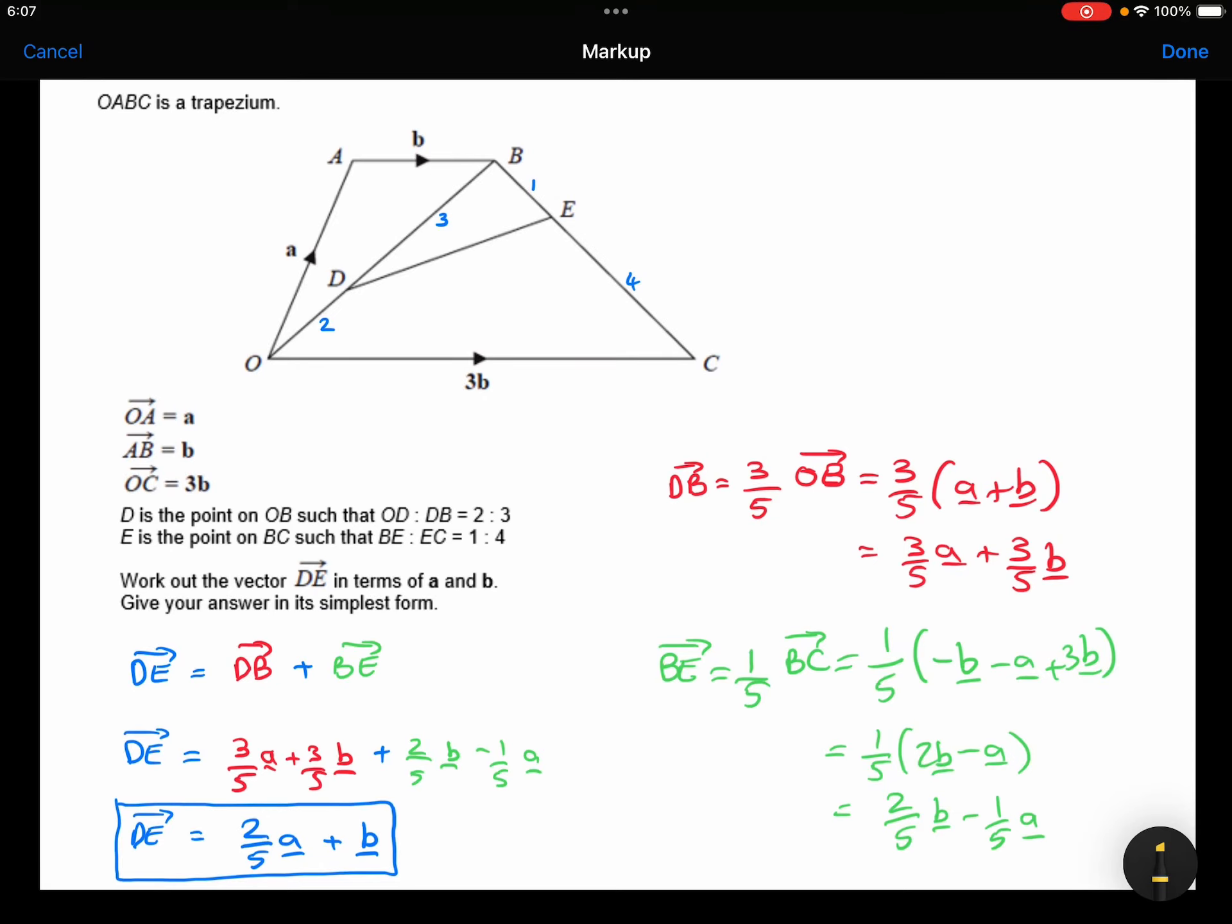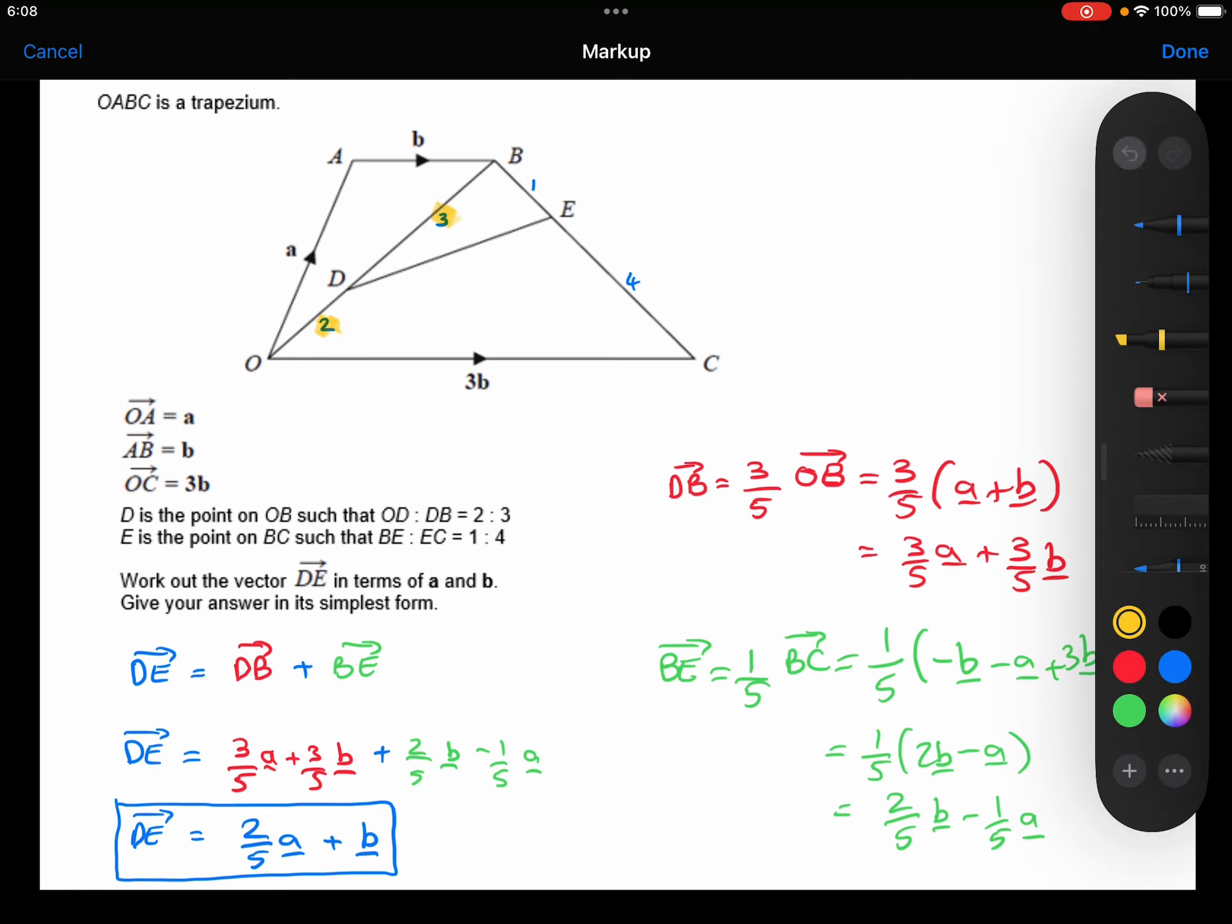We're told that OABC is a trapezium. The vector OA is a, AB is b, and OC is 3b. D is the point on OB such that OD to DB is 2 to 3. E is the point on BC such that BE is 1 and EC is 4.